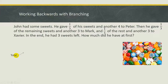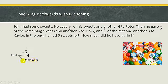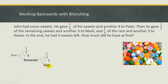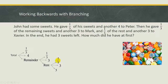We have the total sweets here and we draw three branches. He gave one-third of his sweets and four to Peter, so here is one-third and four, and this will be the remainder after giving to Peter. Then he gave one-third and three more to Mark, so here is one-third and three, and this represents the rest after giving to Mark. Then he gave one-third and three more to Xavier, and in the end he had three sweets left.